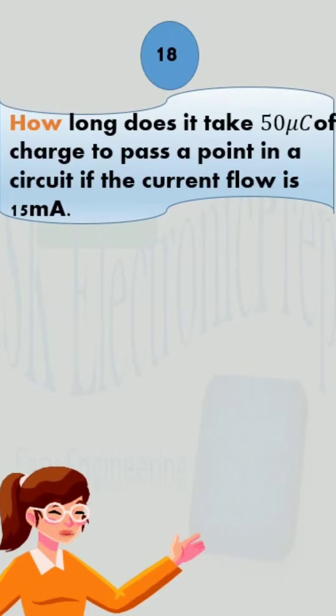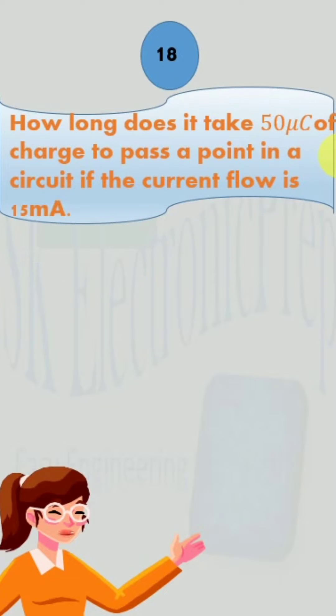How long does it take 50 micro coulombs of charge to pass a point in a circuit if the current flow is 15 mA?